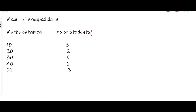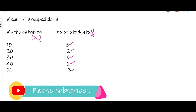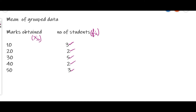Now let us see how to find out the mean of grouped data. Suppose in a class, 3 students got 10 marks, 2 students got 20 marks, 5 students got 30 marks, 2 students got 40 marks, and 3 students got 50 marks. The marks obtained will be our scores, denoted as xi — x1 means the first score, x2 the second, and in general xi means the scores. The number of students is the frequency, denoted as fi, so the score 10 is repeated 3 times and 20 is repeated 2 times, and so on.